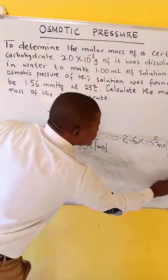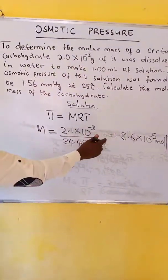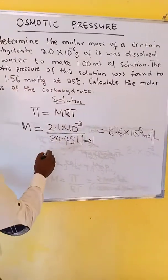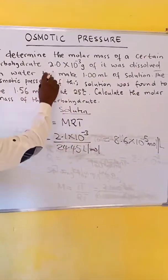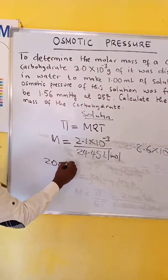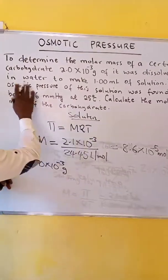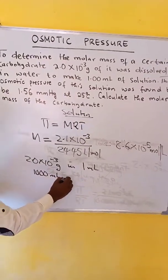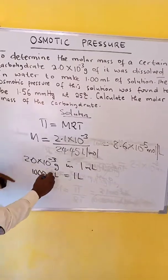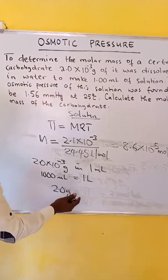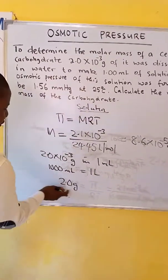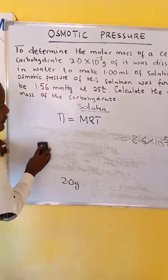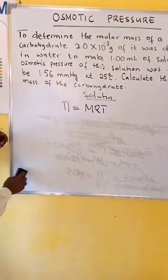We've now calculated the molarity. From the molarity, we can determine the number of moles. We have 8.6 times 10 to the power of negative 5 moles per liter in this solution. Then 2.0 times 10 to the minus 3 grams was dissolved in 1 milliliter of solution. We know that 1000 milliliters is equal to 1 liter, so in this case we have 2.0 grams per liter.